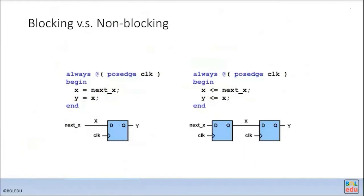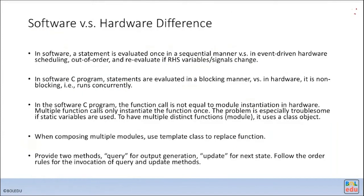Another aspect of structural design is blocking vs. non-blocking, which we introduced before. Here I briefly highlight the difference between software and hardware. It's really difficult to write C code where the hardware generated from it will match the software behavior, because RTL code is actually the hardware. How do we write C code such that running the C program produces results that match the hardware behavior? That's quite difficult.